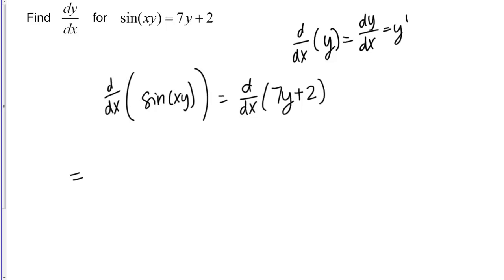What about the left hand side? We're going to have to use the chain rule on this, because we have an outer function and an inner function. We don't just have sine of x, we have sine of x times y. The chain rule tells us we start by taking the derivative of the outer function. The derivative of sine is cosine. We keep the inner function inside.